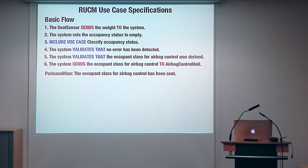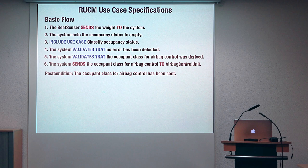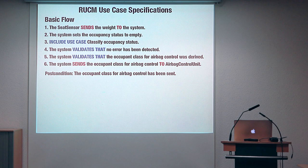This is how our specification looks like. This is the basic flow, the main success scenario, and you have the sentences that describe what happens. The seat sensor, which is an actor, sends an input — the weight — to the system. Then the system sets the occupancy status to empty. Then the system starts trying to understand the occupancy status of the seat, which is described in the use case 'classifying occupancy status'. Then the system validates that no error has been detected, checking for some condition. Then the system checks another condition — whether the occupancy class has been derived — and then sends the output, the occupancy class derived, to the airbag control unit. Then we have a post condition.